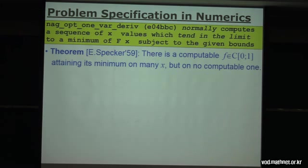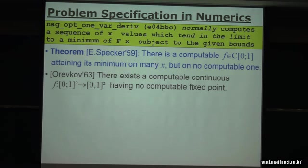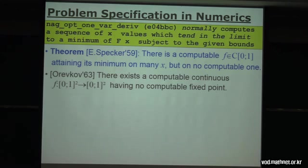Another counterexample: Orevkov in 1963 proved the existence of a computable continuous function from the unit cube to the unit cube which has no computable fixed point. Brouwer's theorem says it has a fixed point — it's a continuous function from a convex compact set to itself — but by construction this one has many fixed points, none of which is computable. So provably, we cannot have an algorithm that returns a fixed point of an arbitrary given computable continuous function.